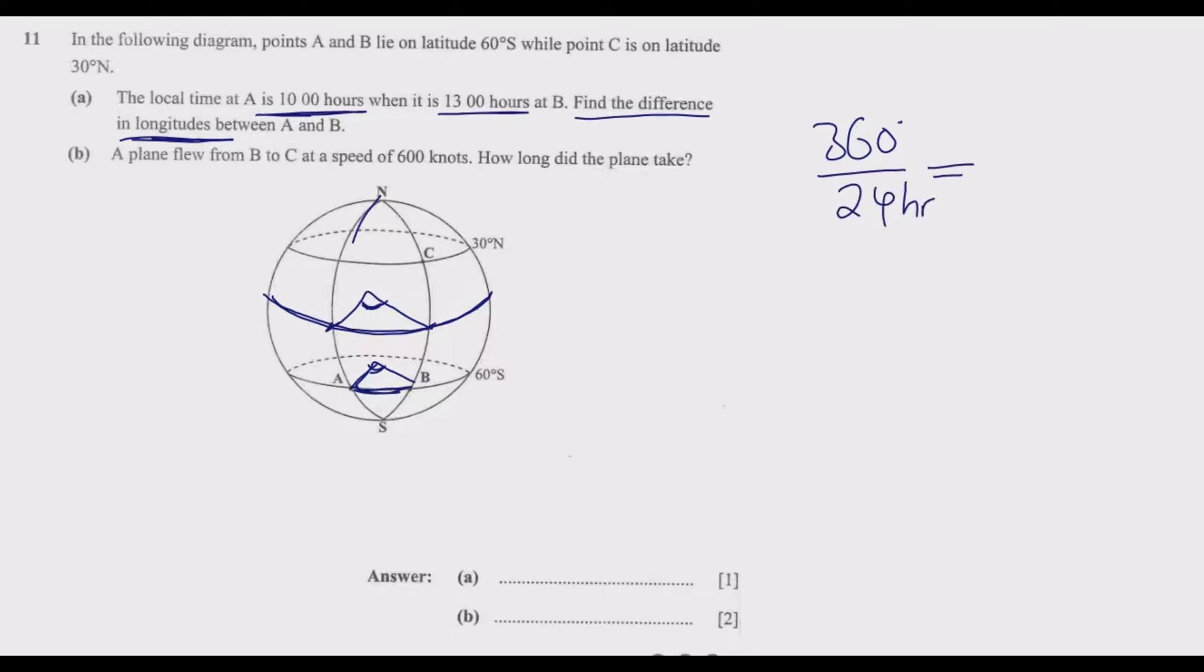If I simplify this: 12 into 24 is 2, 12 into 36 is 3, 2 into 30 is 15. So every 15° is equivalent to one hour. Just divide 360° by 24 hours. For every one hour, this is equivalent to 15° difference.